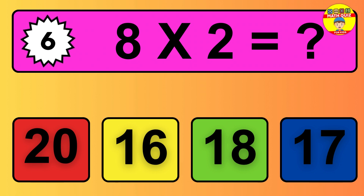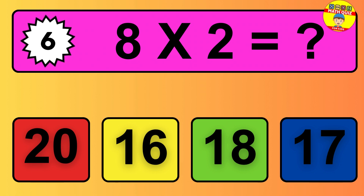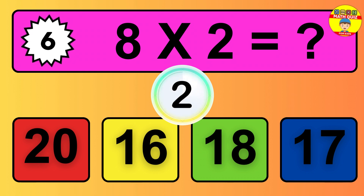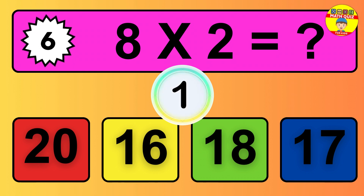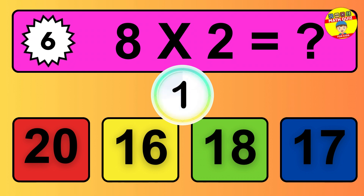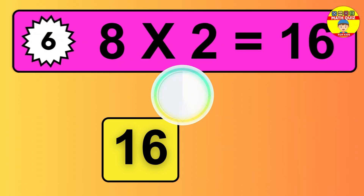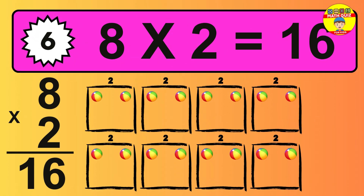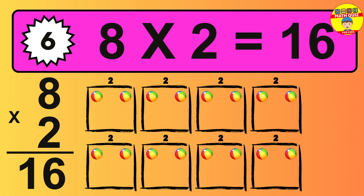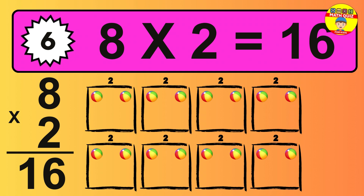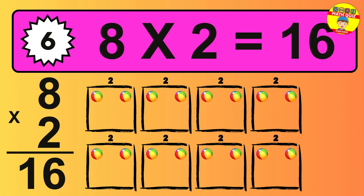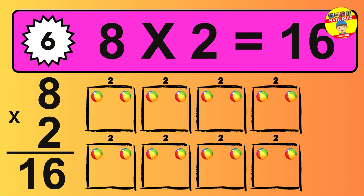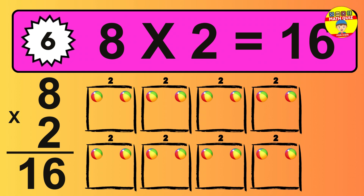Question 6. 8 times 2 equals what? The answer is 8 times 2 is 16. To calculate, we have 8 groups with 2 balls each one. So how many balls do we have? 16 balls.